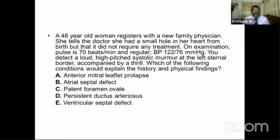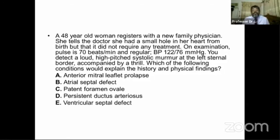Next question: a 48-year-old woman registers with a new family physician. She tells the doctor she had a small hole in her heart from birth but it did not require any treatment — so there is a shunting anomaly. On examination pulse is 70 bpm, BP 122/76 mmHg. A loud harsh systolic murmur at the left sternal border accompanied by a thrill is detected.